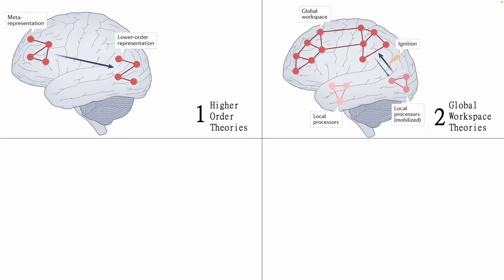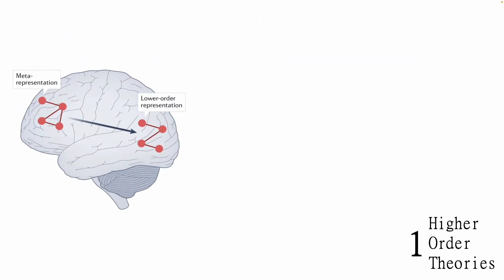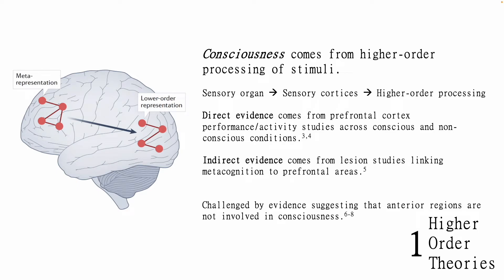These four are: higher order theories, global workspace theories, integrated information theory, and re-entry theory. Seth and Bain identify higher order theories as believing at their core that consciousness comes from higher order processing of stimuli. Higher order theories focus on explaining why some systems are conscious and others are not, with multiple layers of meta-representation being central to consciousness. Because of this, higher order theories often dismiss the function of consciousness, seeing it instead as the result of meta-analysis. This theory favors the prefrontal cortex heavily, which has been shown experimentally to be the center of higher order attempts to account for the phenomenal character of emotion and meta-cognitive states — perhaps better said, as the center of where we decide what something is like in order to make perceptual decisions. These theories are often challenged by evidence suggesting that anterior regions are not involved in consciousness, perhaps only being important for executive control of other regions.